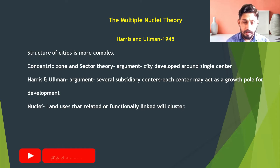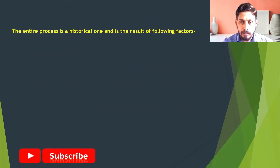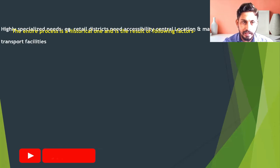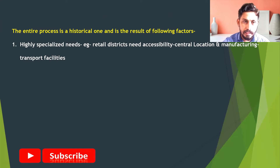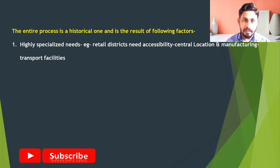To understand how multiple nuclei were created in the city, we look at the factors responsible for their formation. This formation is a historical process, and the factors include: certain activities are limited to a particular site because they have highly specialized needs. For example, a retail district needs accessibility, which is best at the city center, while a manufacturing center requires efficient transportation facilities.